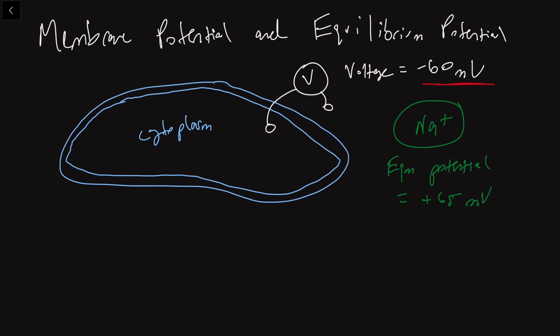So if I took a voltmeter and I plugged one end of the voltmeter outside the cell, and then another side of the voltmeter just underneath that phospholipid bilayer of our cell, we're going to get a voltage of minus 60 millivolts.